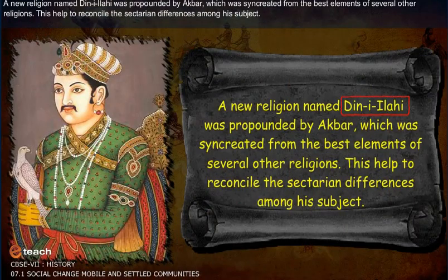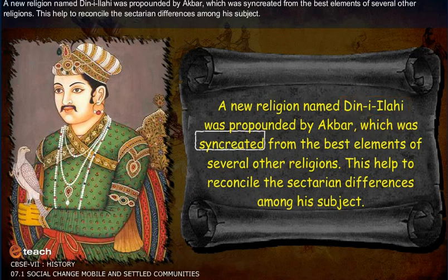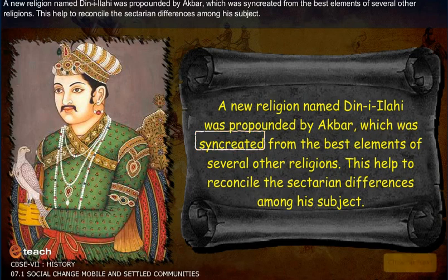The Hindus and Muslims came closer under the Mughal rulers. A new religion named Din-i-Ilahi was propounded by Akbar, which was synthesized from the best elements of several other religions. This helped to reconcile the sectarian differences among his subjects.